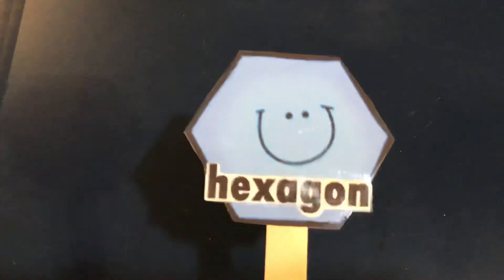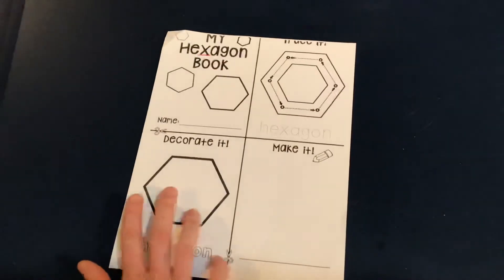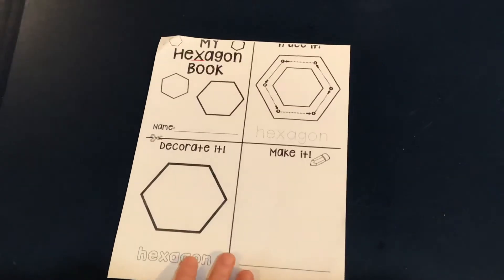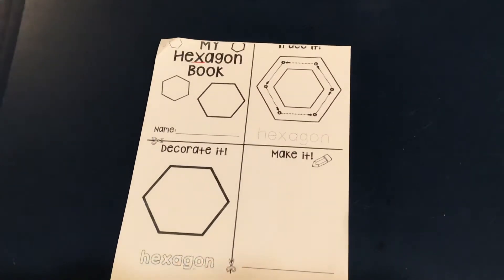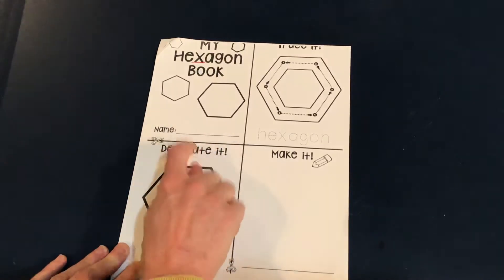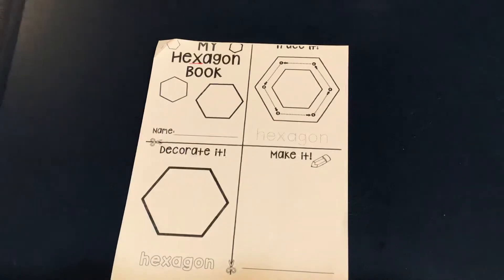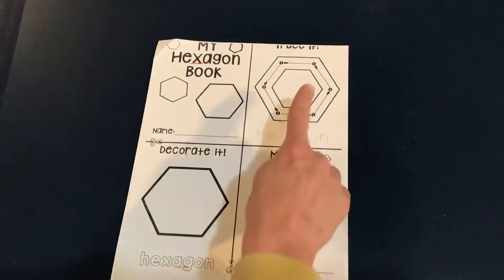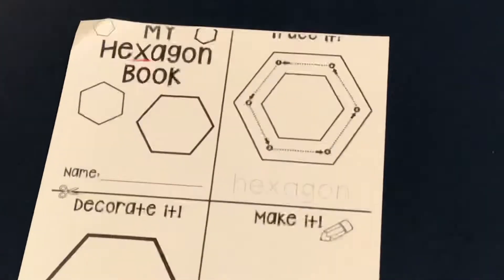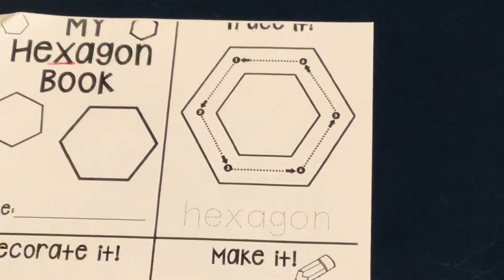See you soon. Thank you, Mr. Hexagon. Now let's get to our hexagon book. The first thing you're going to do is, of course, write your name. We always love to see your name written on your paper. Next, you are going to trace the hexagon — let's zoom in on it.